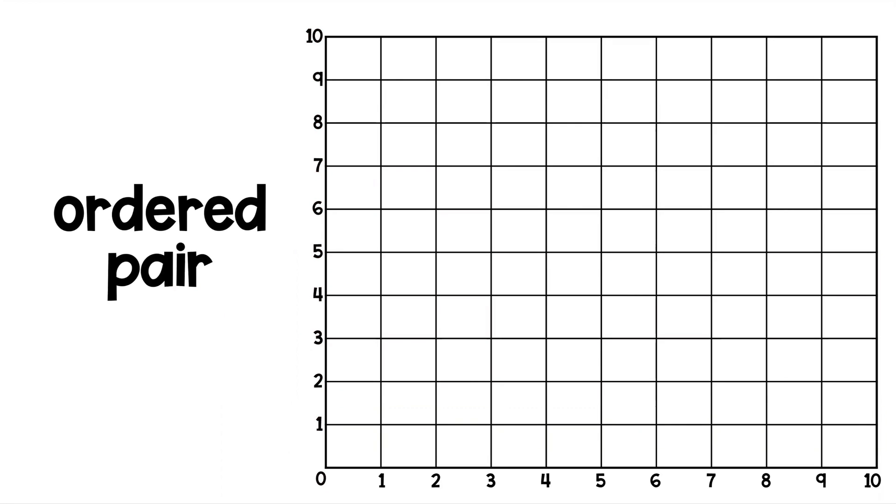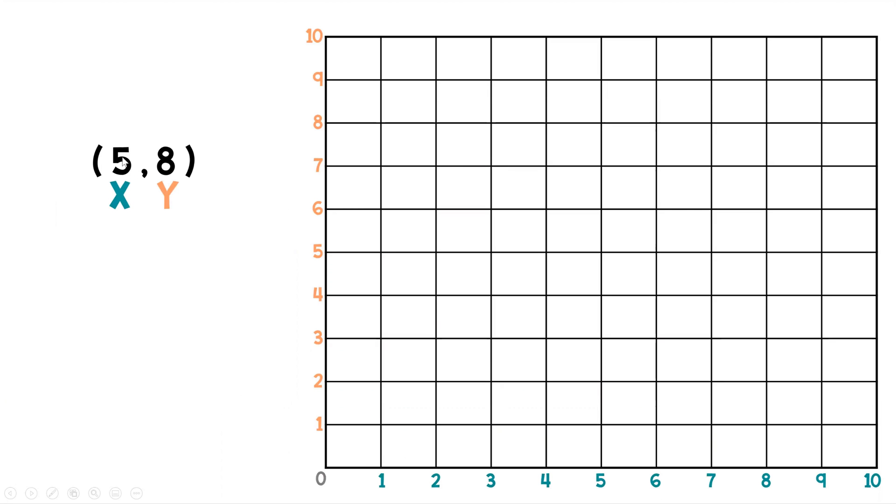Another thing you need to be aware of is something which is called an ordered pair. An ordered pair is going to be a pair of numbers that are in a specific order. Ordered pair, a pair of numbers, pair meaning two, they're in a specific order. Now, the order that these numbers are in is going to be according to the x-axis and the y-axis. So in your ordered pair, you always start with your x-axis, which is going to be these numbers down here. Then, you go to your y-axis, which is going to be these numbers right here.